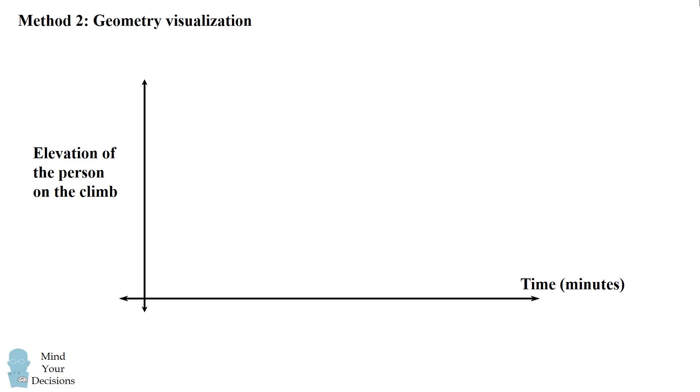So one graph will be a linear graph to the top of the climb for the cyclist ascent.